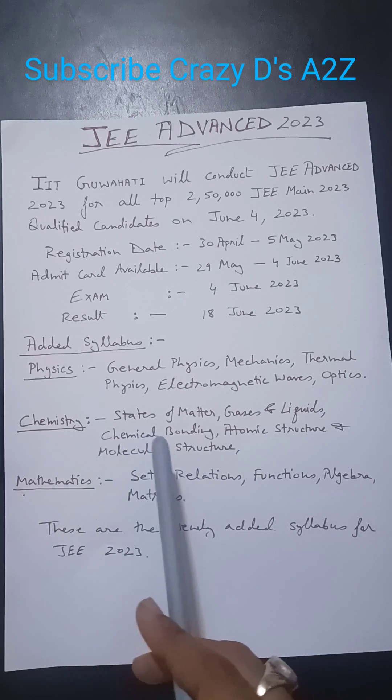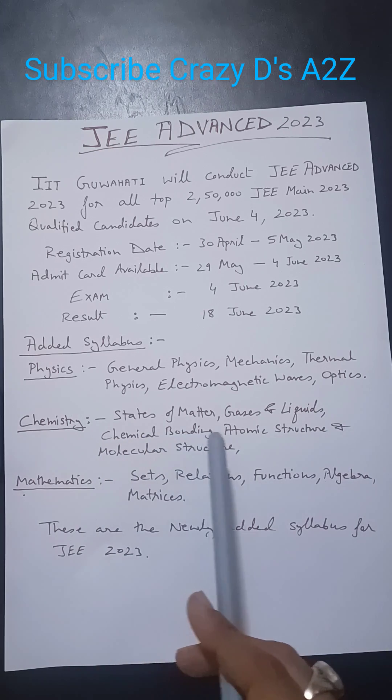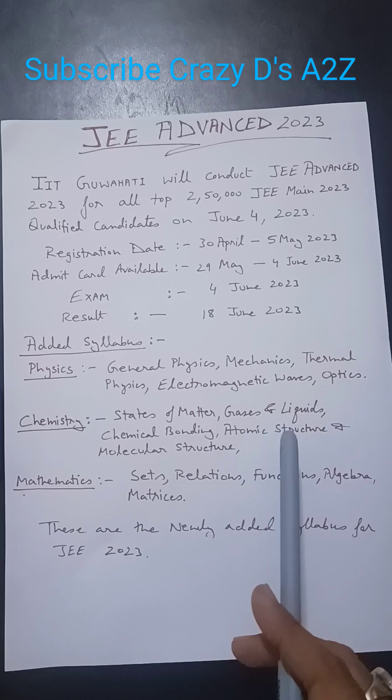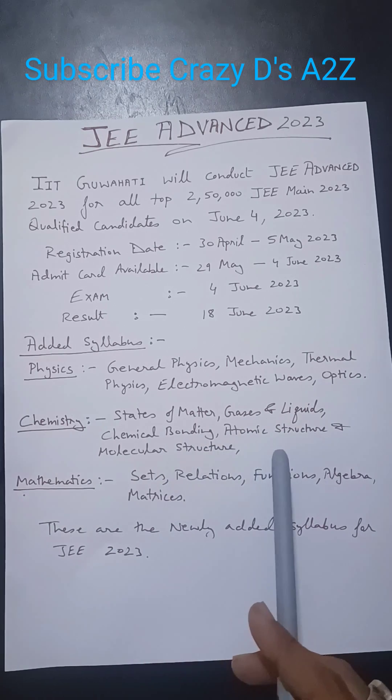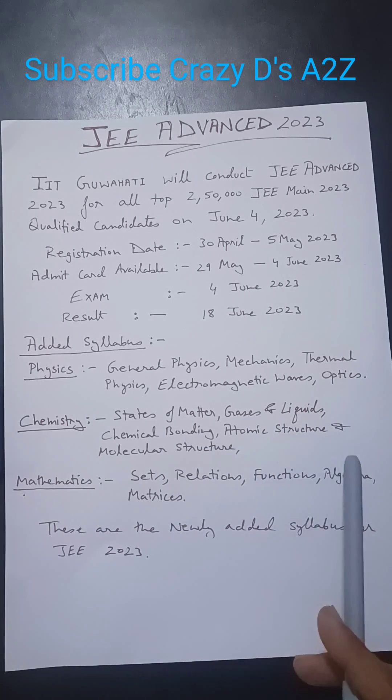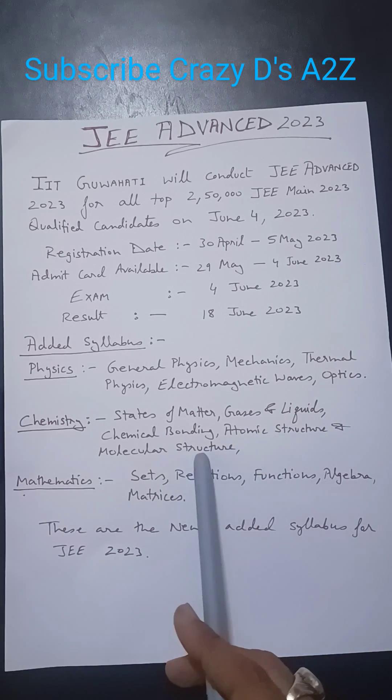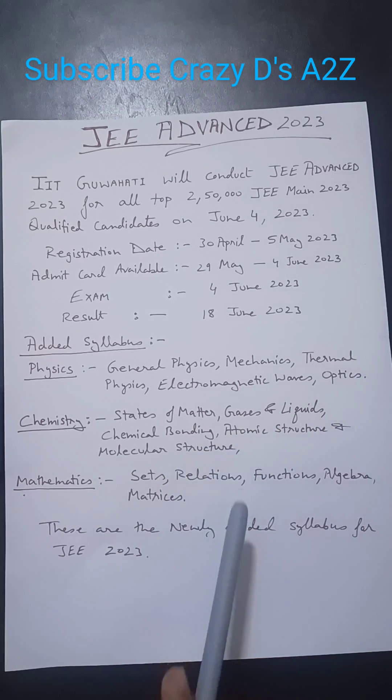In chemistry, states of matter, gases and liquids, chemical bonding, atomic structure, and molecular structure have been included.